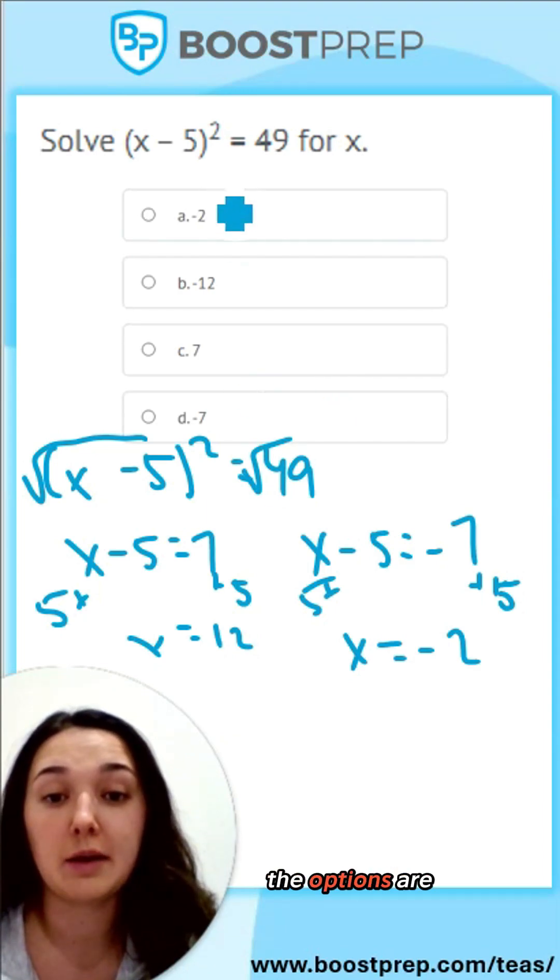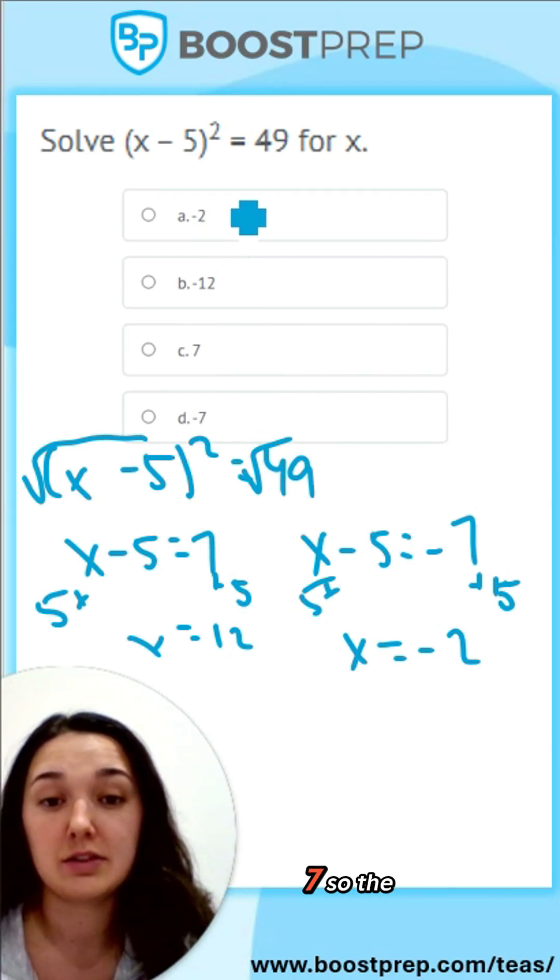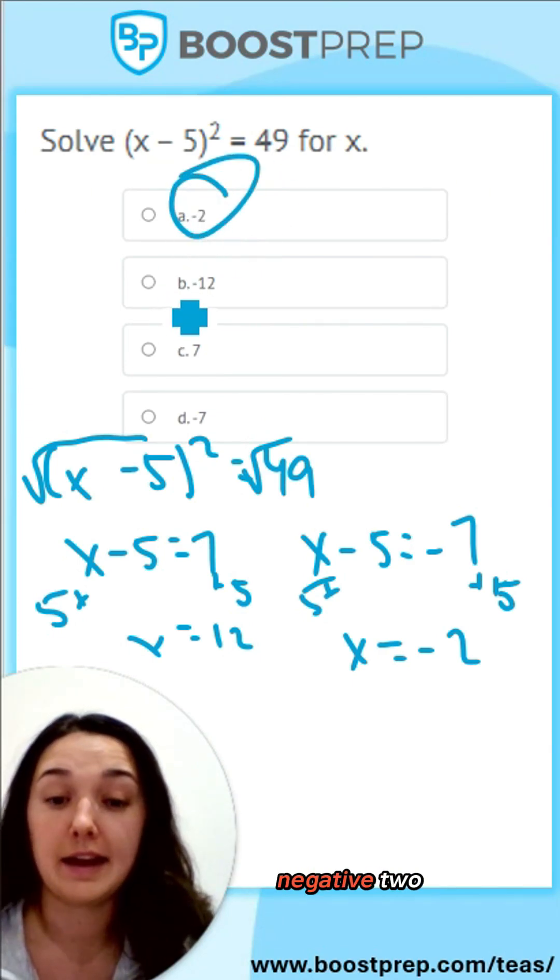In this problem specifically, the options are negative 2, negative 12, 7, and negative 7. So the answer is a negative 2.